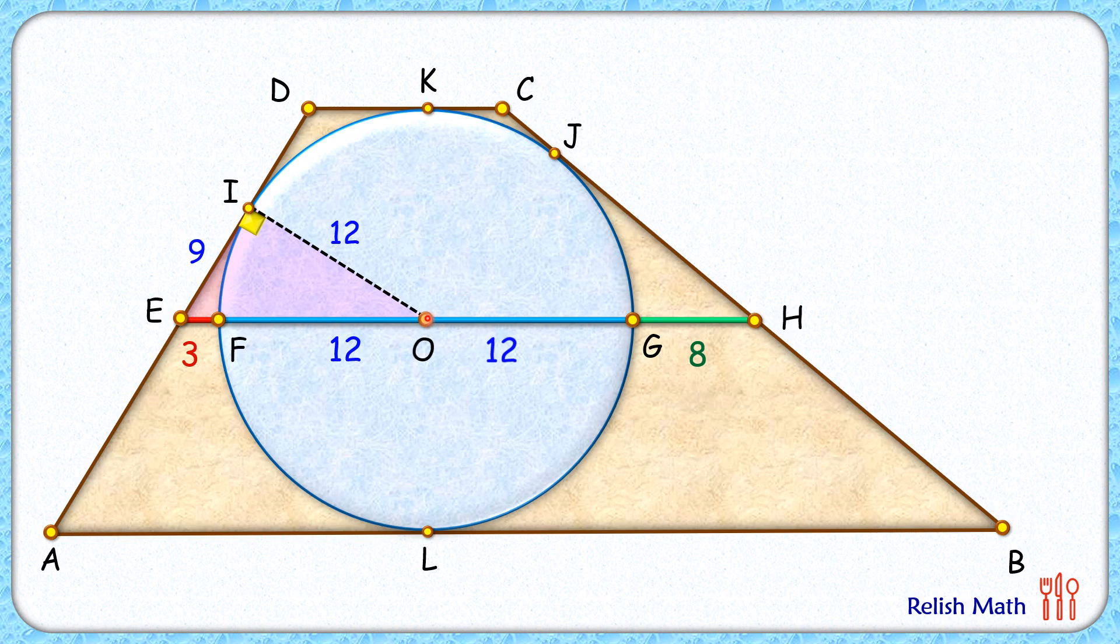Same way let's join the center to point of tangency J. OJ is the radius thus 12 cm and this triangle formed is a right angle triangle with hypotenuse length as 20 cm. Applying Pythagoras theorem we can find JH as 16 cm.